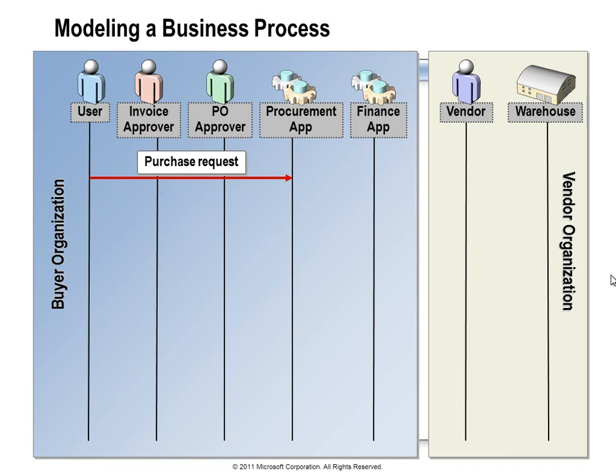Our user is ordering some materials for an upcoming project, but since this request has exceeded the limits of automatic approval, the procurement system needs to send an email to a manager to approve this purchase. We need to consider that whenever we start involving humans in a process, we don't know how long it's going to take to get a response. The manager might approve it instantly — a matter of seconds — or the manager might be out of the office, making it hours or even days.